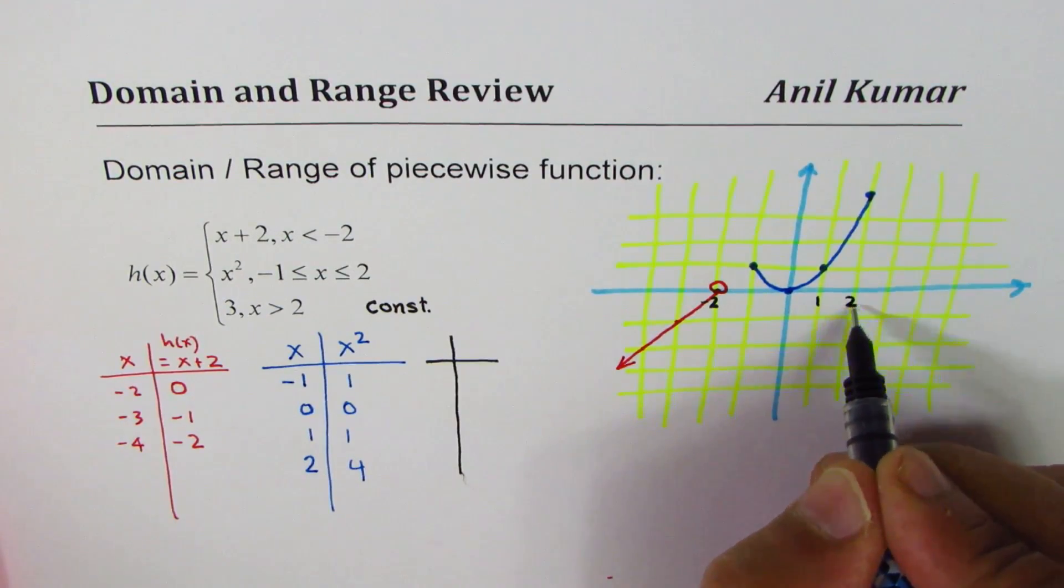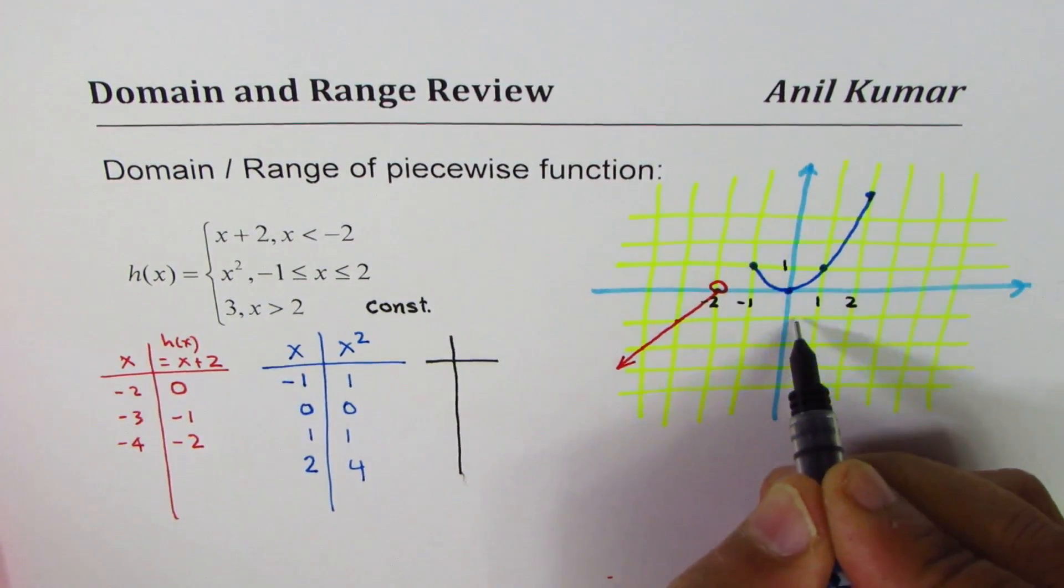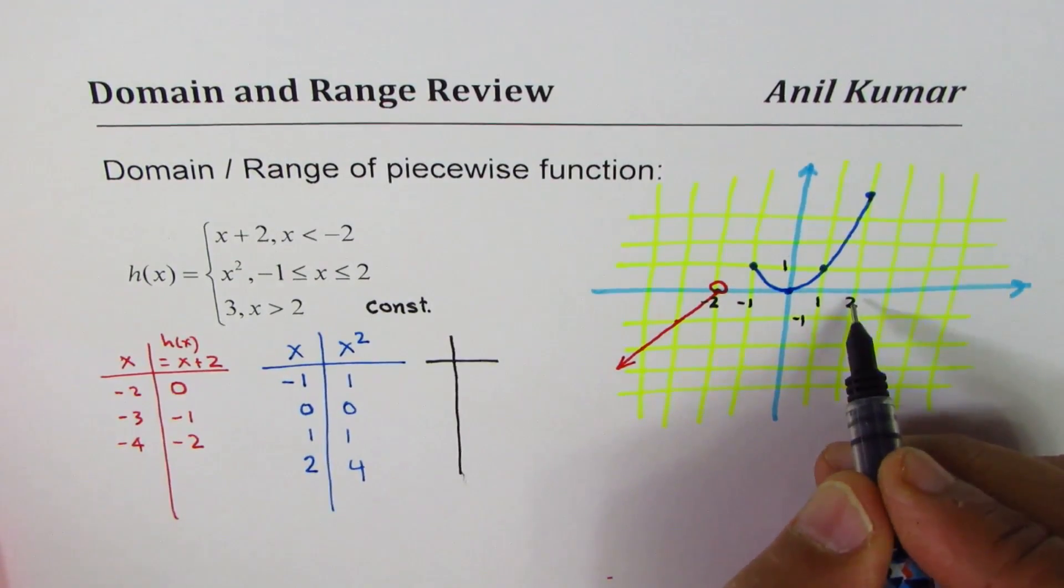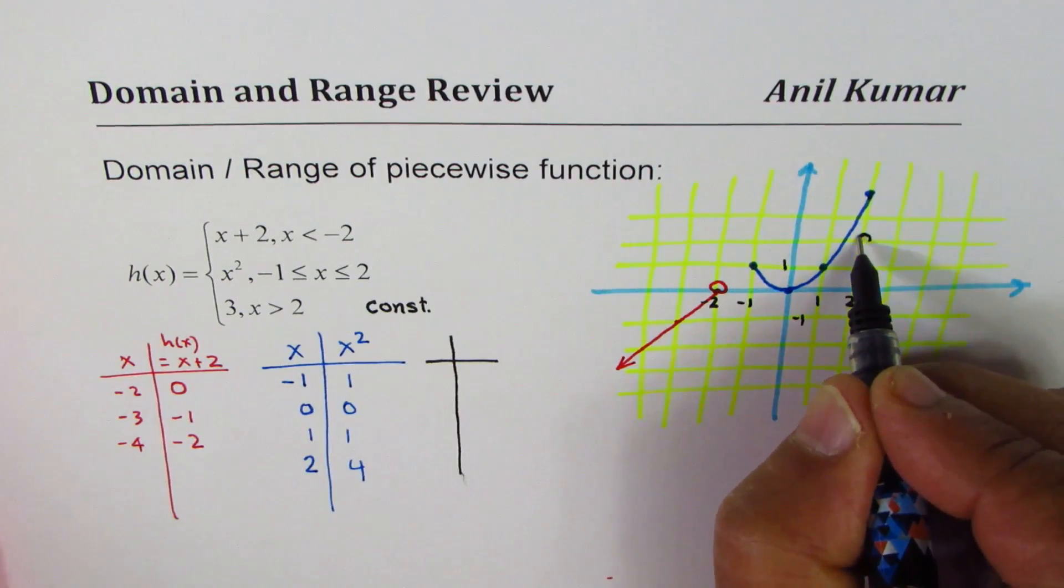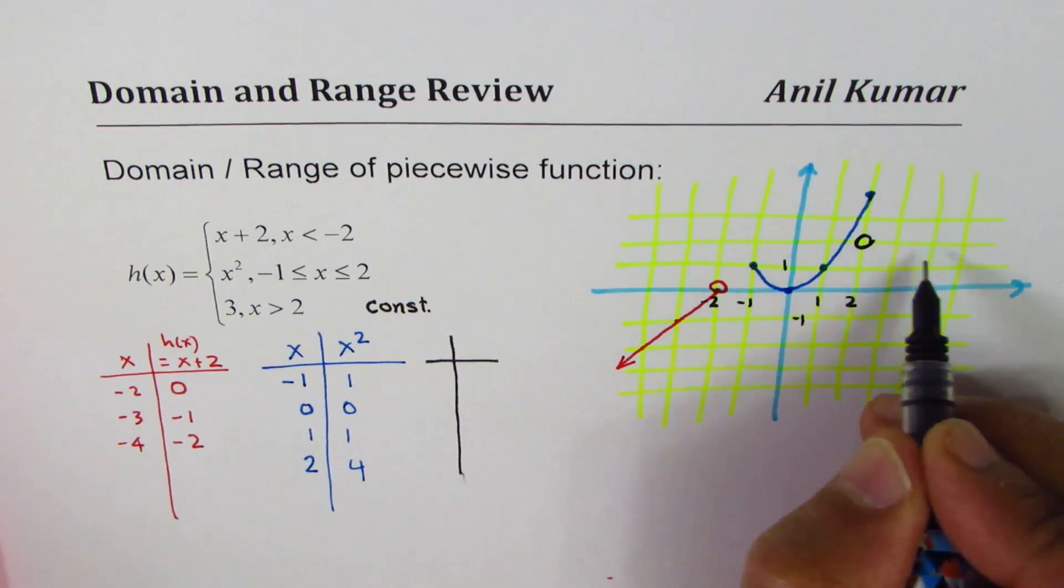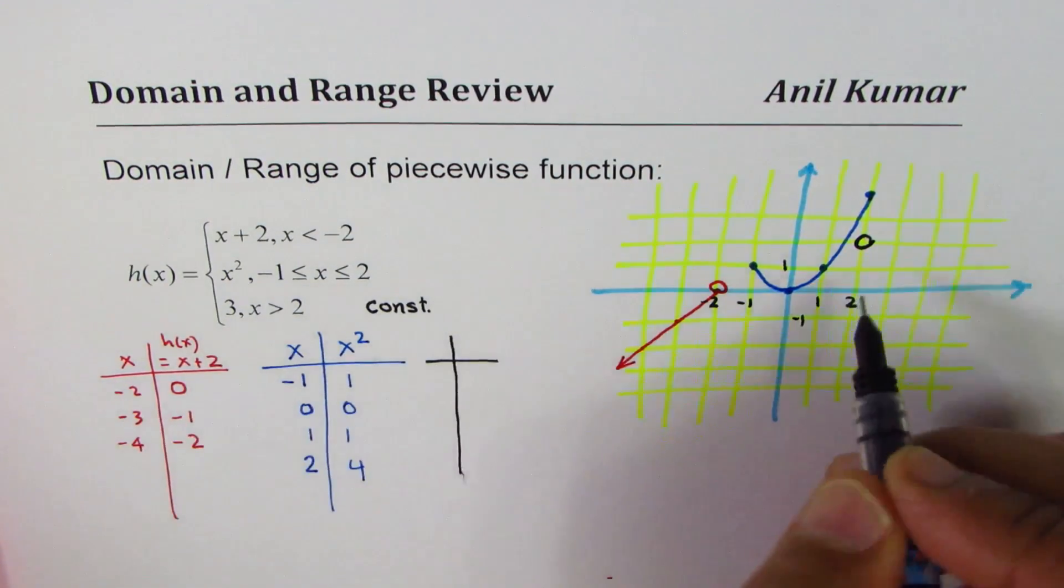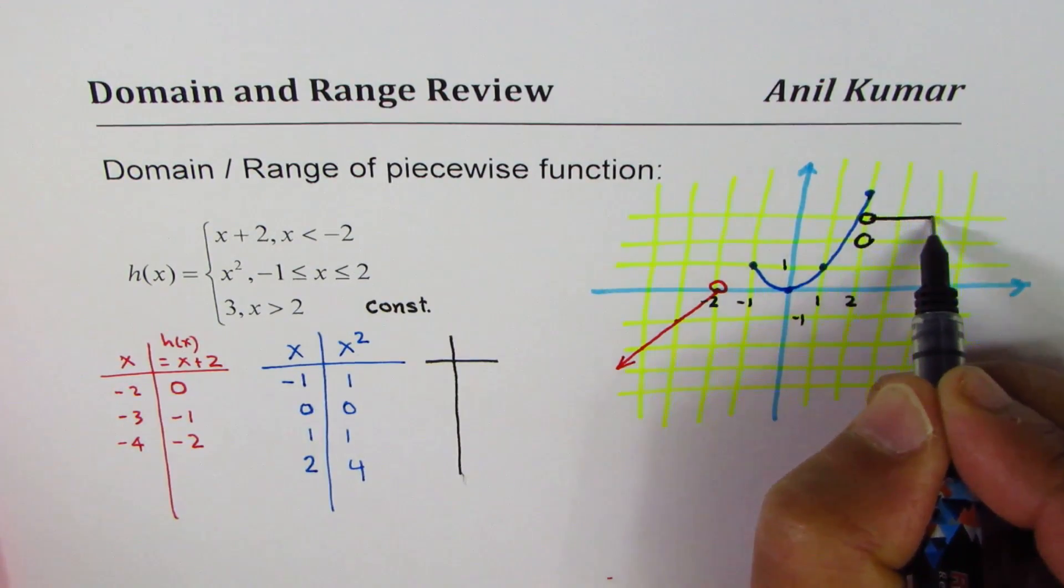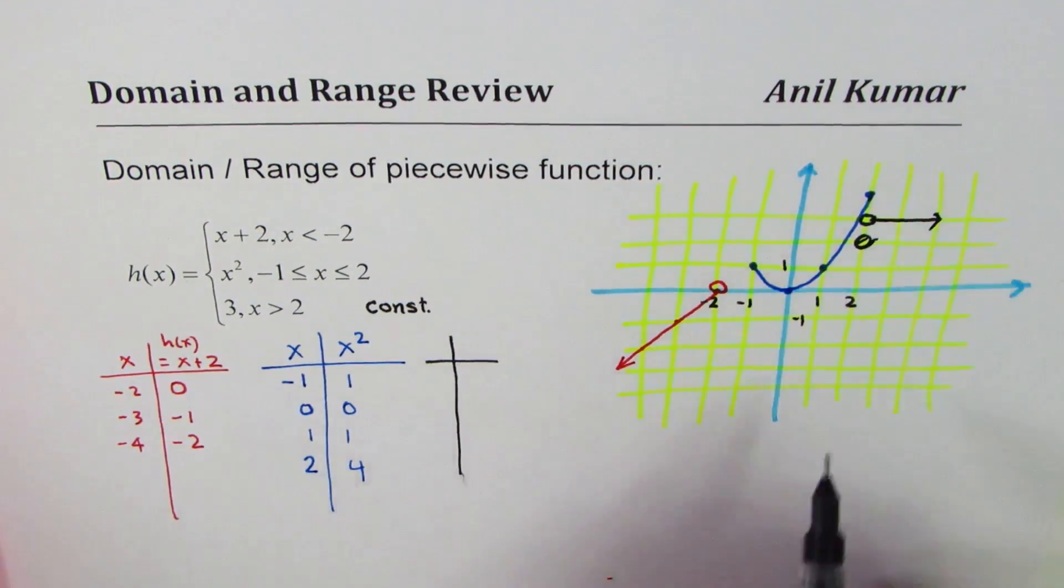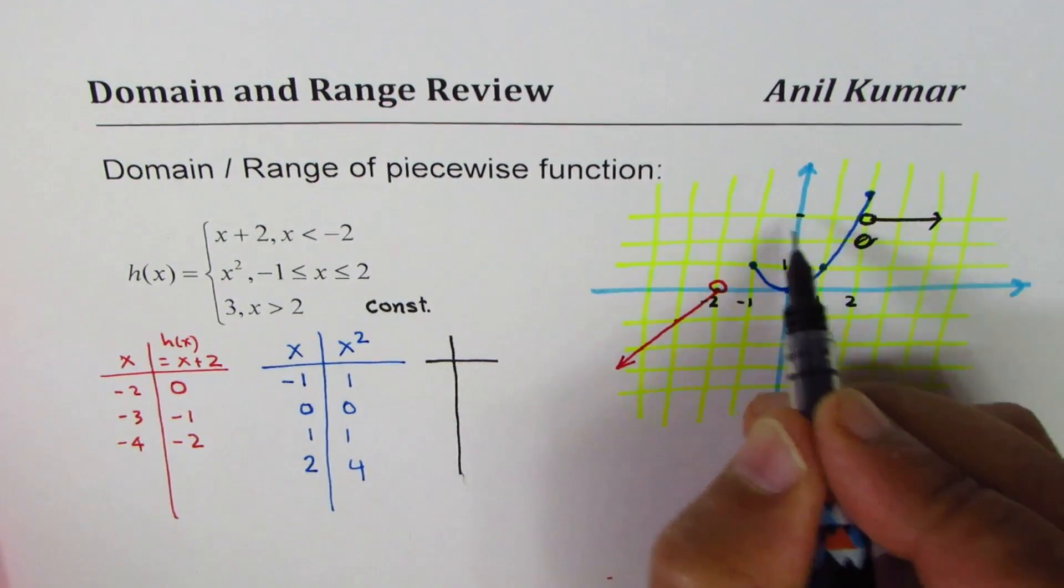So from 2 onwards, for x greater than 2, that means it is 3, but 2 is not included. So open circle here. And then like this. So that is 3 for us.